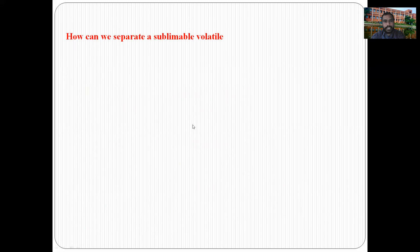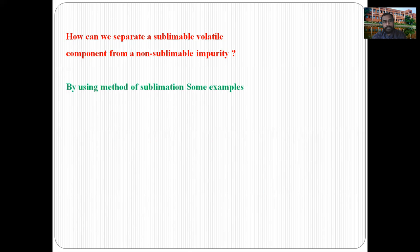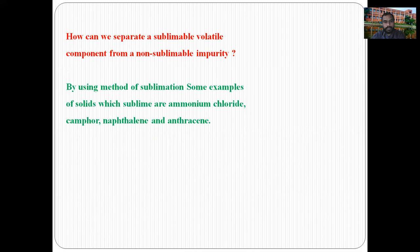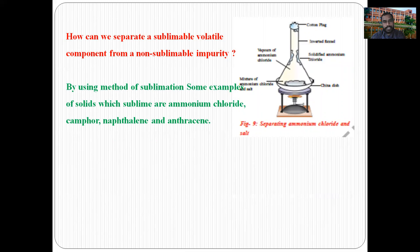How can we separate a sublimable volatile component from a non-sublimable impurity? By using the method of sublimation. Some examples of solids which sublime are ammonium chloride, camphor, naphthalene, and anthracene. Sublimation is a physical phase transition directly from the solid state into vapor state. So a mixture of ammonium chloride (sublimable) and sodium chloride (non-sublimable) can be easily separated by applying the sublimation technique.